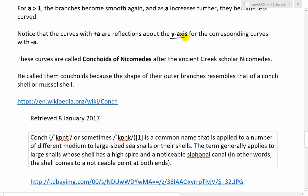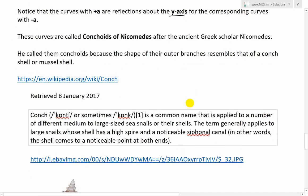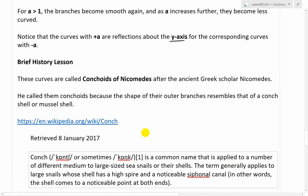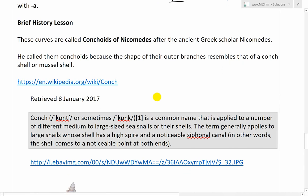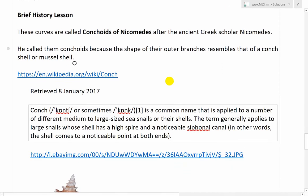And also notice that the curves with positive a are reflections about the y axis for the corresponding curves with negative a. And yes, it's just a mirror reflection about the y axis. So the left and right sides are basically mirror images. And these curves are called Conchoids of Nicomedes.